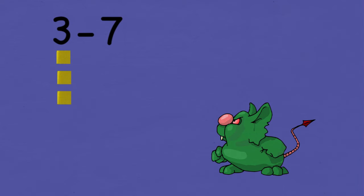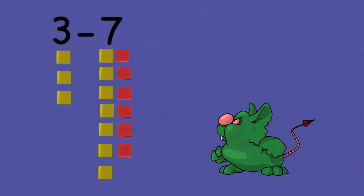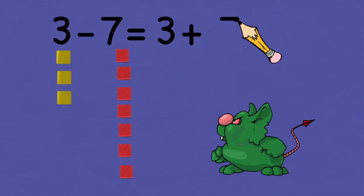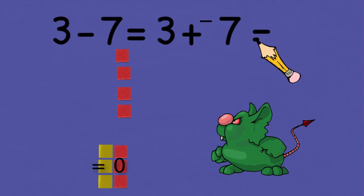But since I don't have 7 positives to take away, I'm going to insert 7 zero pairs into the problem, because 3 plus zero pairs is still equal to 3. Now I have 7 positives I can take away, leaving me with the problem 3 plus negative 7.